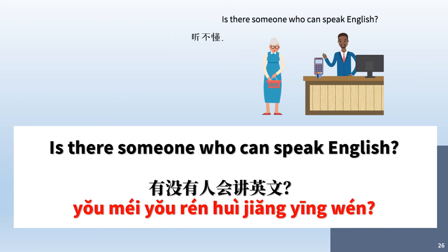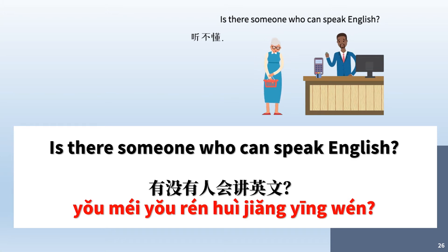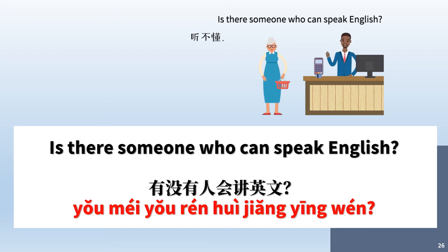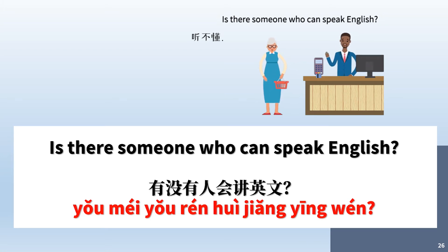Is there someone who can speak English? 有没有人会讲英文. Word by word: 有没有 — is there any; 人 — someone or person; 会 — can or know how to; 讲 — speak; 英文 — English.